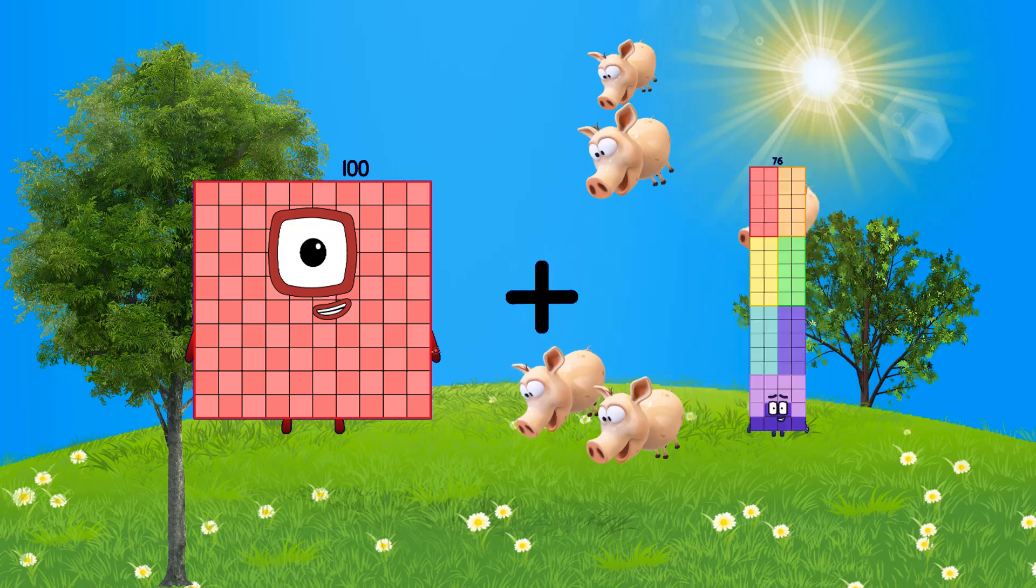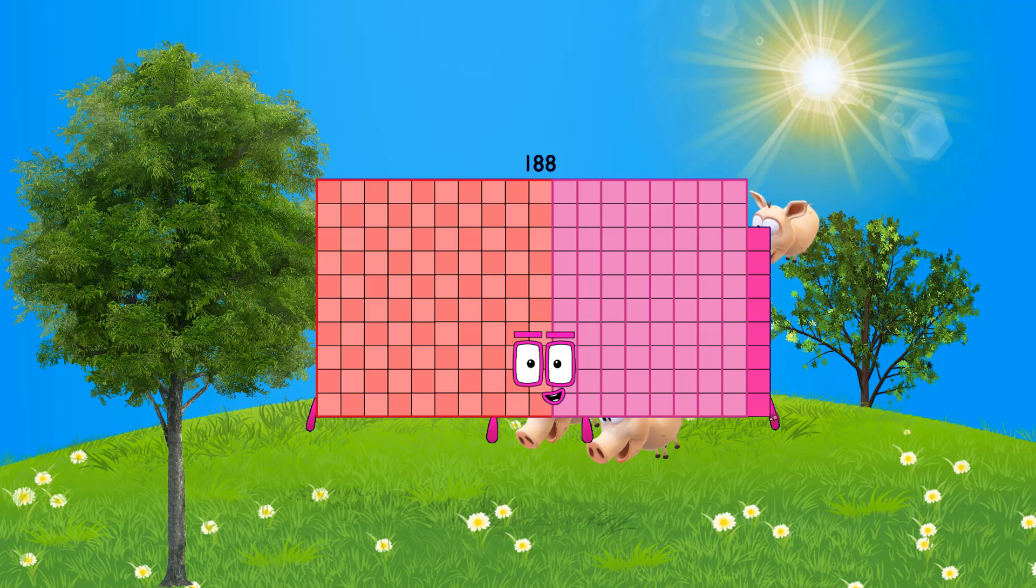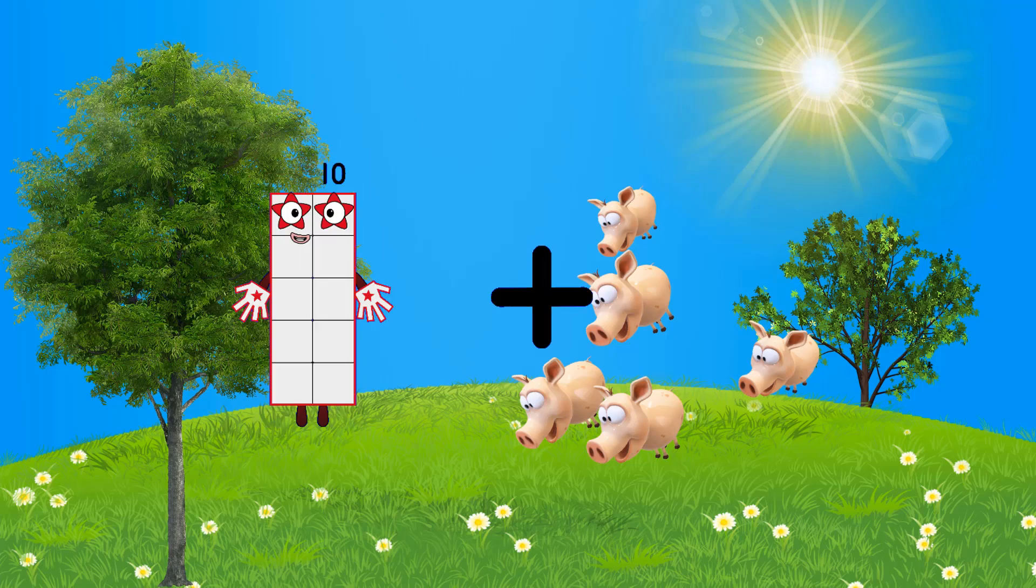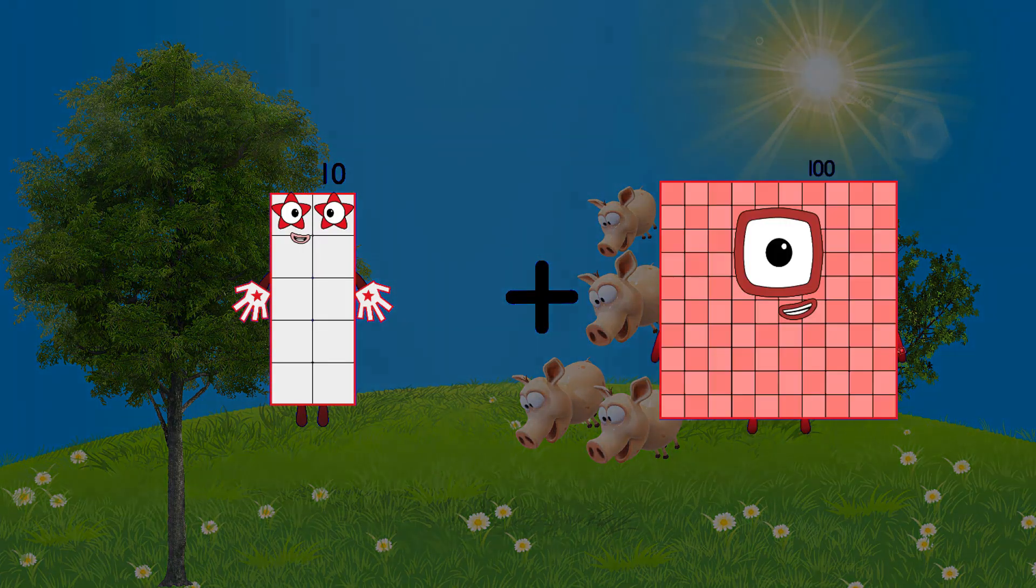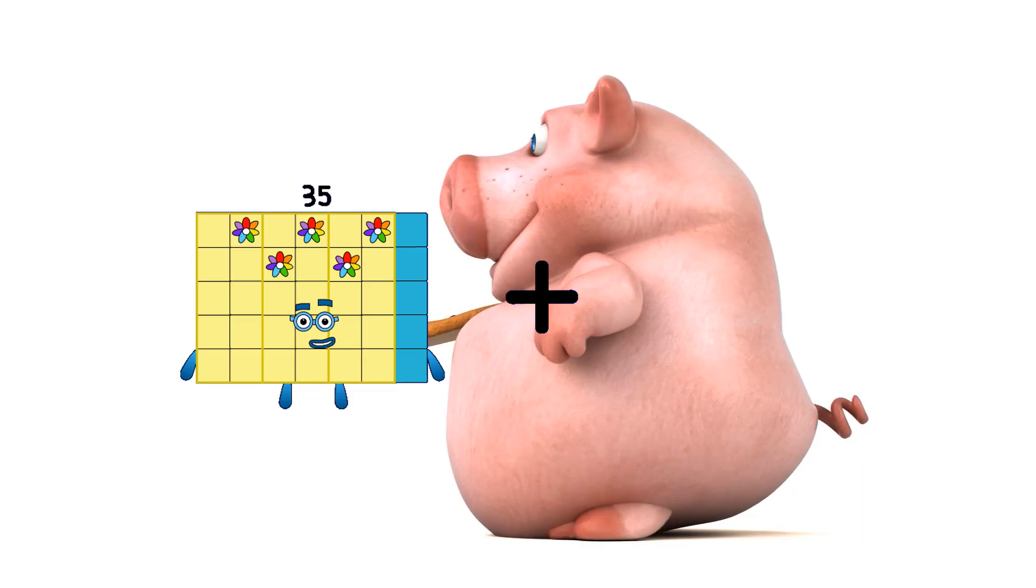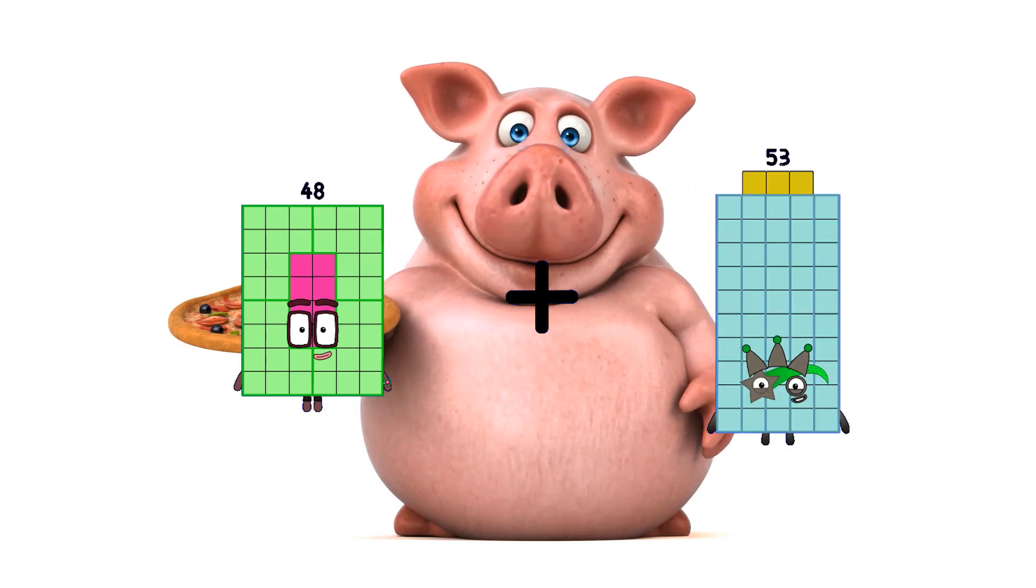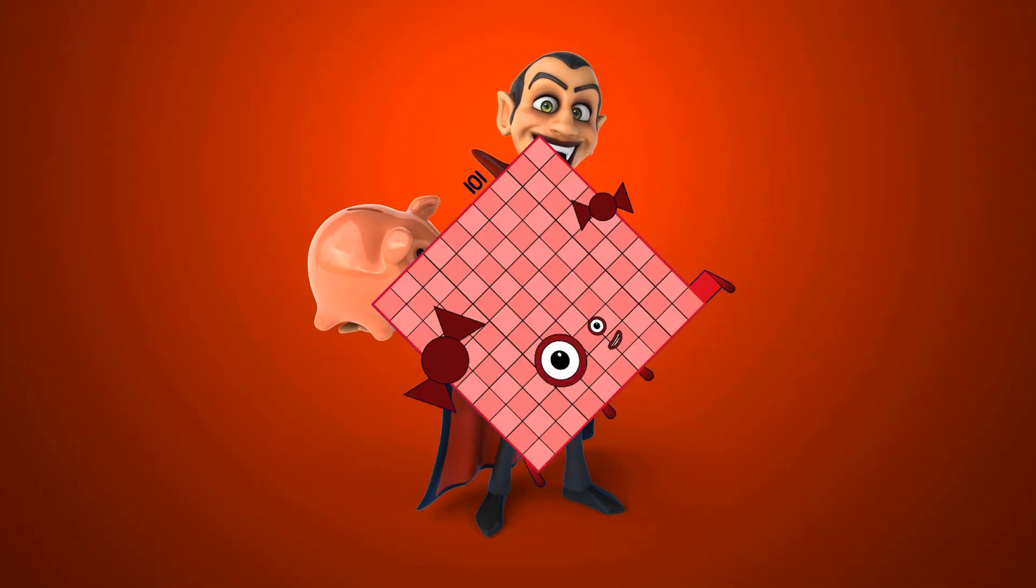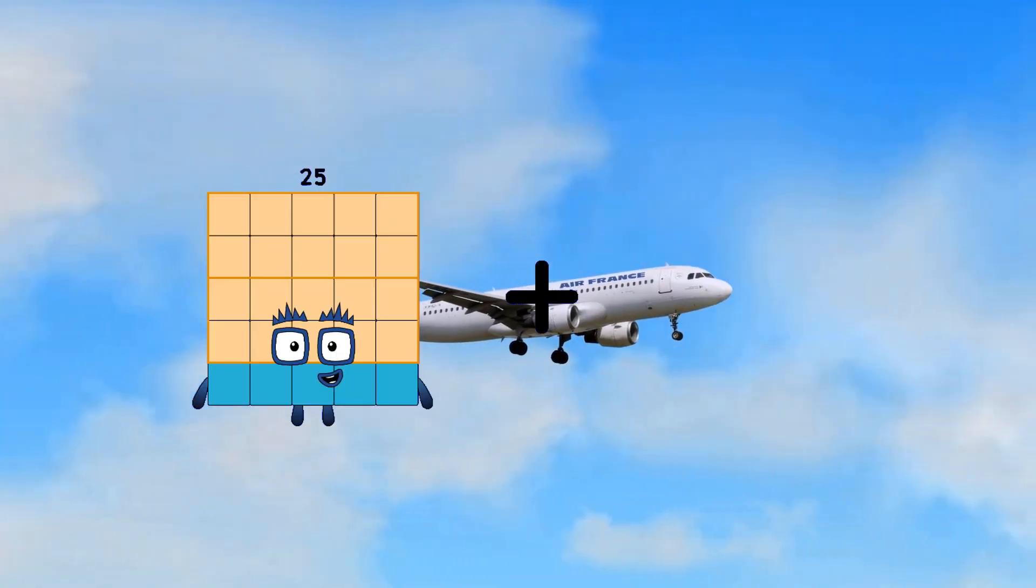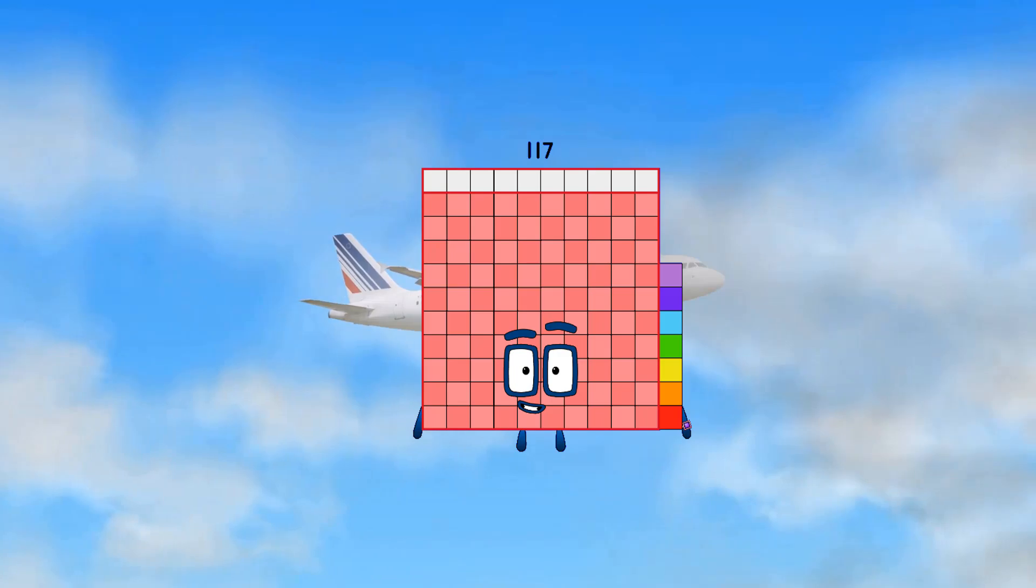3 plus 23 equals 26, 2 plus 80 equals 82, 100 plus 88 equals 188, 10 plus 100 equals 110, 48 plus 53 equals 101, 25 plus 92 equals 117.